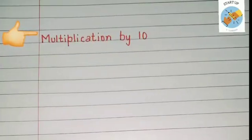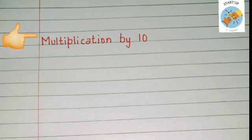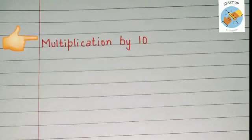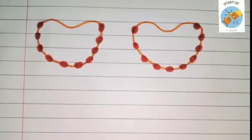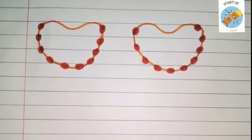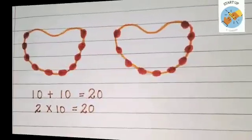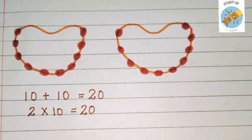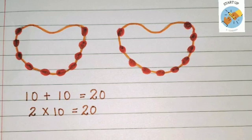Let's start with multiplication by ten. Children, when we multiply the numbers by ten, we put a zero in the ones place and multiply the other numbers. See these necklaces — each one of them has ten beads in it. If I want to know how many total beads there are, ten plus ten is equal to twenty beads, or we can multiply two by ten, which is equal to twenty.